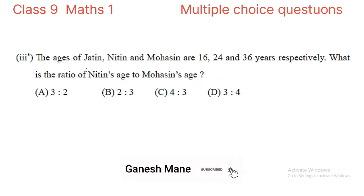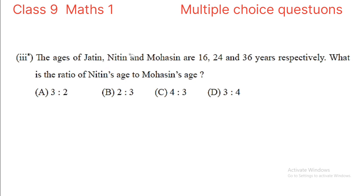Next question: the ages of Jatin, Nitin, and Mohsin are 16, 24, and 36 years respectively. What is the ratio of Nitin's age to Mohsin's age? The options are 3 is to 2, 2 is to 3, 4 is to 3, or 3 is to 4. We need to find the ratio of Nitin's age to Mohsin's age.